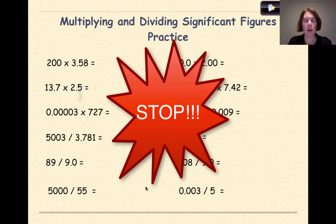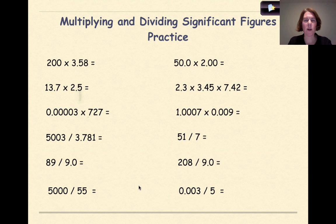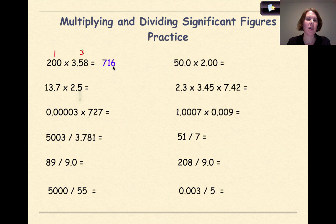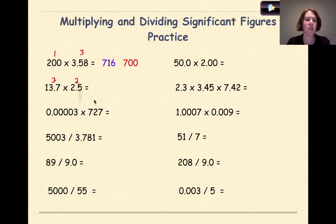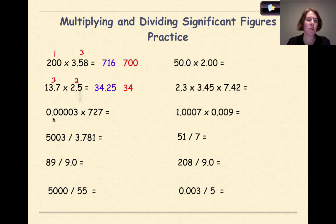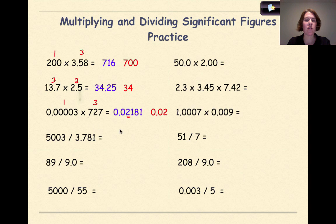Now stop and do some practice, then we'll check your work. Welcome back. First: 200 times 3.58. 200 has one significant figure, 3.58 has three, so multiplying gives 716, but I can only have one significant figure — final answer is 700. Next: 13.7 times 2.5. That's three and two significant figures respectively. I get 34.25, round down to two sig figs, answer is 34. Then 0.00003 times 727. That's one and three sig figs. I can only have one significant figure, so my answer is 0.02.